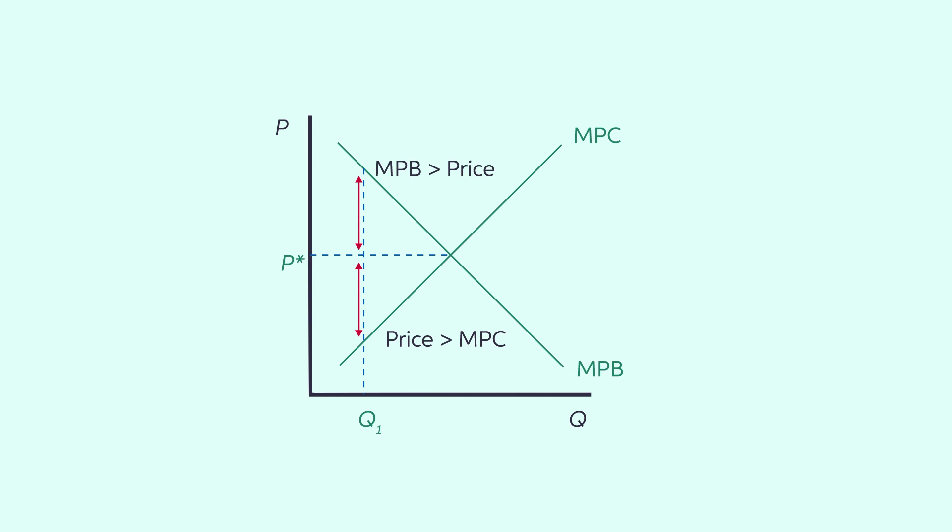The MPB determines the consumer's willingness to pay for buying an additional unit of the good. When MPB is greater than the price at Q1, the consumer will purchase that quantity of the good. The MPC determines the minimum supply price that the producer is willing to take for making one more unit available for sale. When the price at Q1 is greater than the MPC, the producer will supply that quantity of the good.